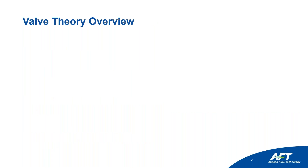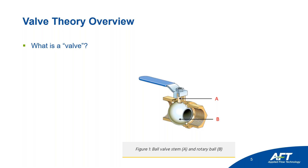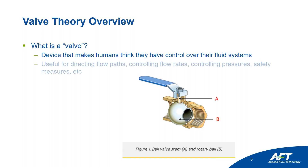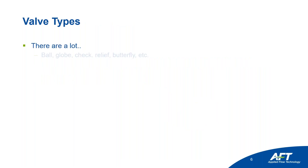What is a valve? A valve is a device that makes humans think they have control over their fluid systems. Here we've got a picture of a ball valve — a quarter-turn valve you can turn to completely stop flow or allow a little bit through. Valves are useful for directing flow paths, controlling flow rates, controlling pressures, and for safety measures. But most importantly, valves are sources of pressure loss — that's the most important thing when we're talking about software.